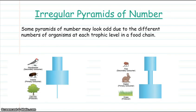We can, however, get irregular pyramids of number. Some pyramids of numbers may look odd due to the different numbers of organisms at each trophic level in the food chain.